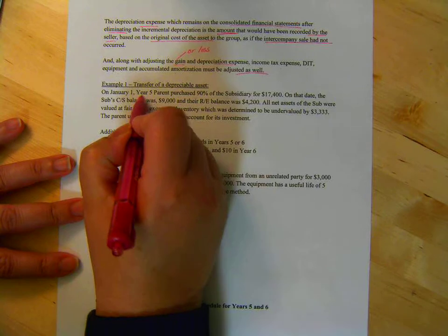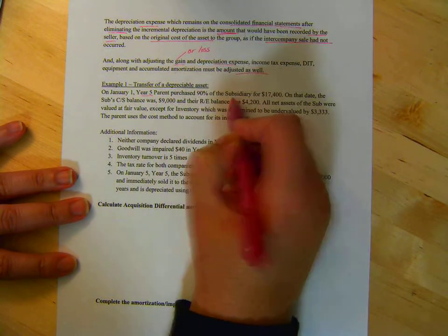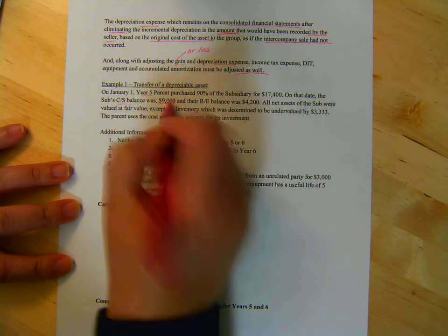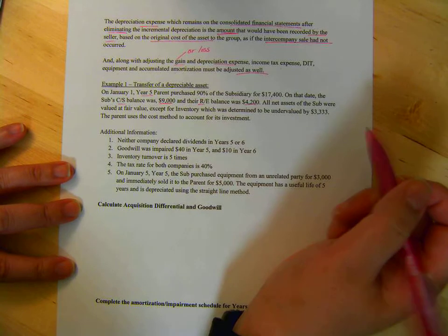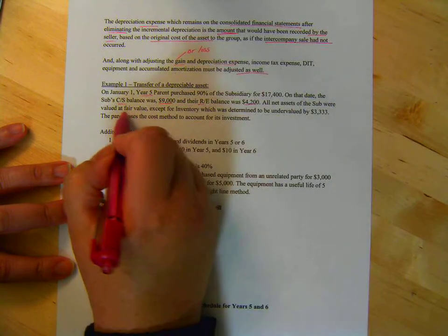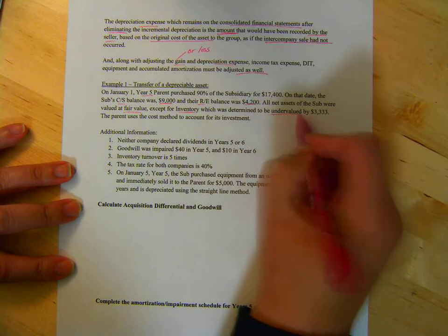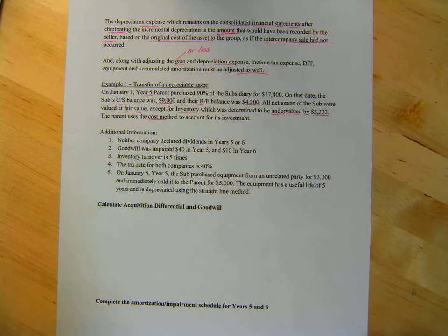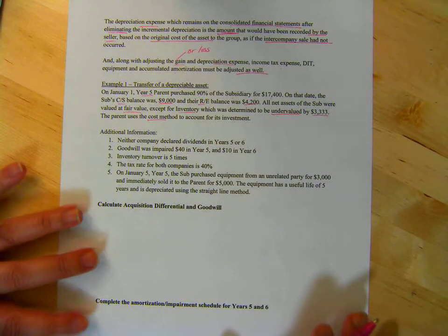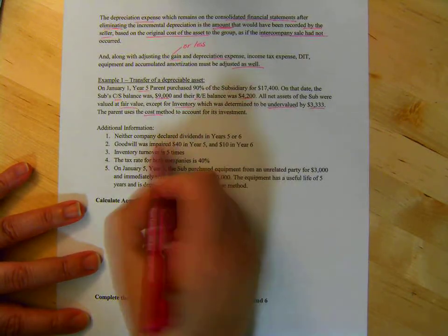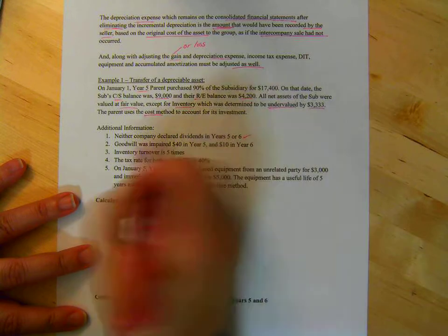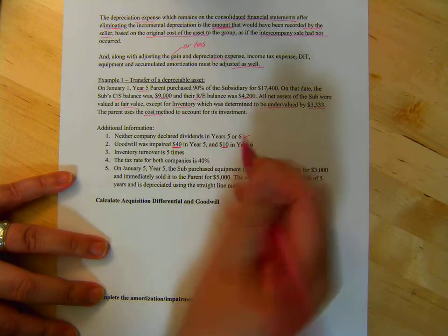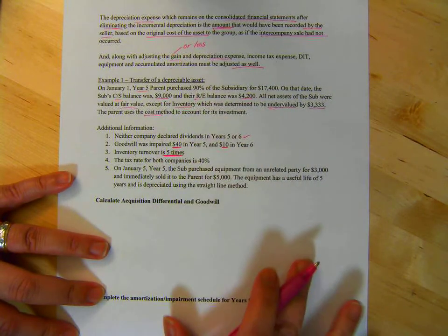So, let's go through an example and you can see how it works. January 1st, Year 5. Parent purchased 90% of the sub for $17,400. On that date, the sub's common share balance was $9,000. Retained earnings balance was $4,200. All the net assets of the sub were valued at fair value except for inventory which was undervalued by $3,333. Parent uses the cost method to account for its investment. Additional information. Neither company declared dividends in Year 5 or 6. Goodwill was impaired $40 in Year 5, $10 in Year 6.